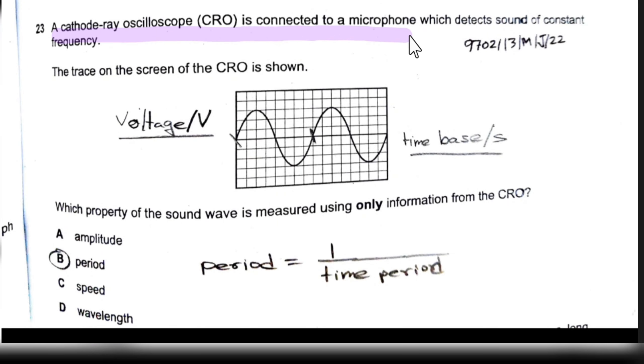A cathode ray oscilloscope is connected to a microphone which detects the sound of constant frequency. The trace on the screen of the CRO is shown. Which property of the sound wave is measured using only the information from the CRO?